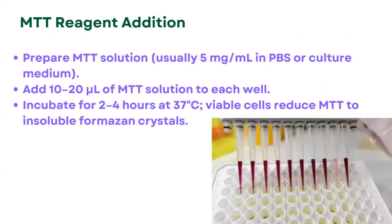The next step is MTT reagent addition. Prepare the MTT solution — usually 5 mg/mL in PBS or culture media. Add 10 to 20 microliters of MTT solution to each well, then incubate for 2 to 4 hours at 37°C. If the cells are viable, they will reduce MTT to insoluble formazan crystals.